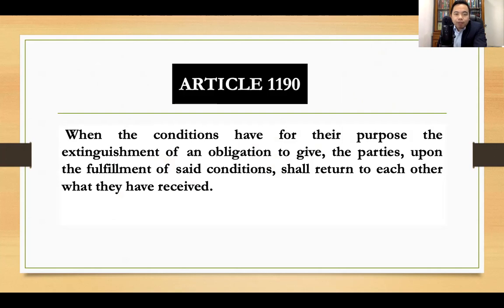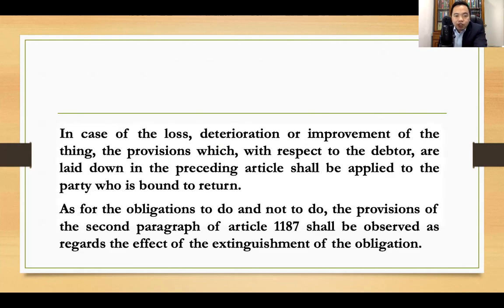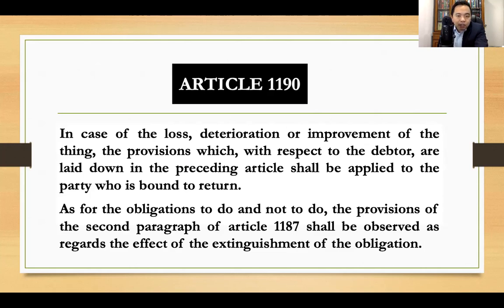Let us go to Article 1190. Article 1190 provides that when the conditions have for their purpose the extinguishment of an obligation to give, the parties upon the fulfillment of said conditions shall return to each other what they have received. In case of loss, deterioration, or improvement of the thing, the provisions with respect to the debtor laid down in the preceding article — meaning 1189 — shall be applied to the party who is bound to return.